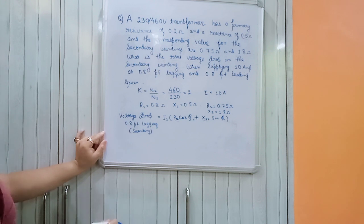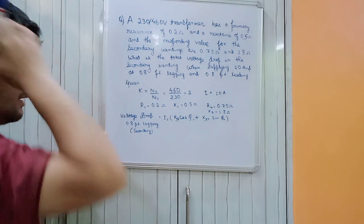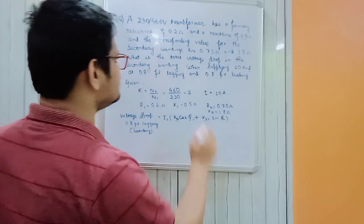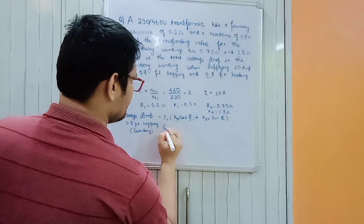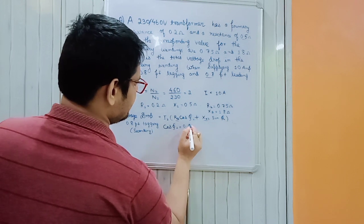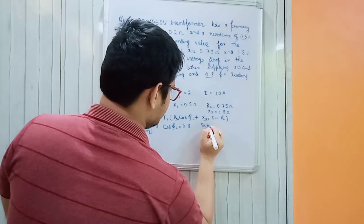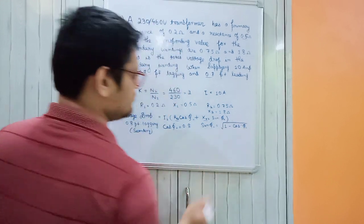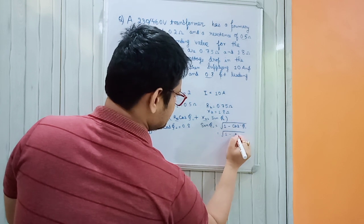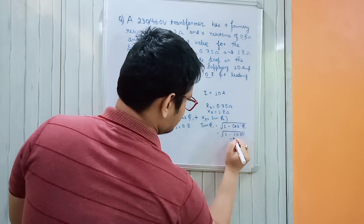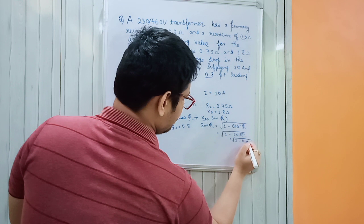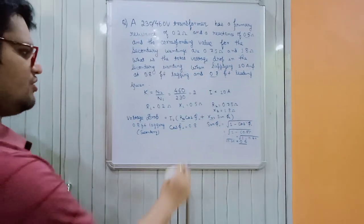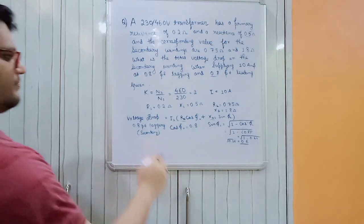We need to find cos φ₂ and sin φ₂. cos φ₂ is already given as 0.8. sin φ₂ = √(1 − cos²φ₂) = √(1 − 0.64) = √0.36 = 0.6. So cos φ₂ = 0.8 and sin φ₂ = 0.6.